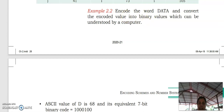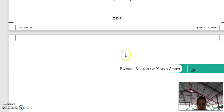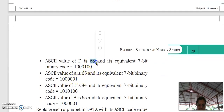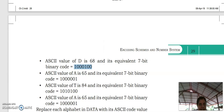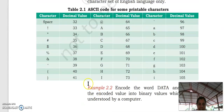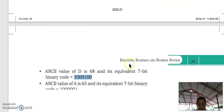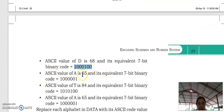Then if we encode the word DATA, first it is converted to decimal value and then it is converted to binary value. For D the value is 68, and its equivalent binary code is in the form of 7 bits. We will study in the next portion how decimal values are converted into binary digits. Next is A — the value of A equals 65, which is converted to binary form.